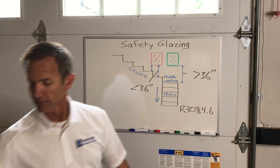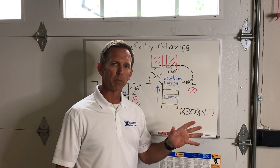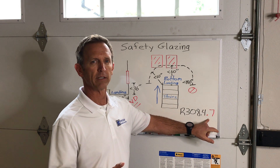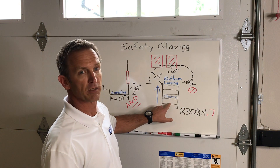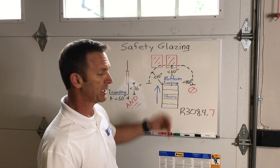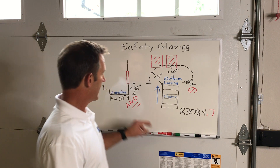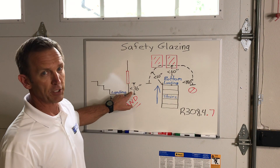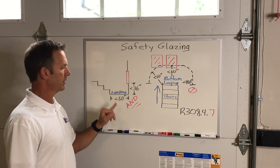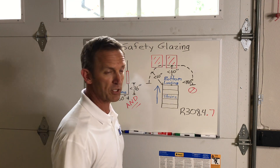Now let's look at bottom landings, which were pulled out to their own section a couple of code cycles ago — 308.4.7. We've reversed the direction of travel on the stairs to illustrate this scenario. In 308.4.7, there are two conditions that both must be met: the glass must be less than 36 inches from the walking surface AND less than 60 inches horizontally from the tread nose of that bottom stair. If both conditions are met, it must be addressed from a safety glazing standpoint.